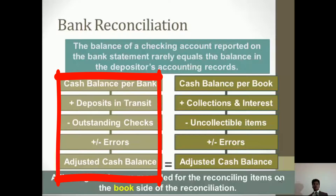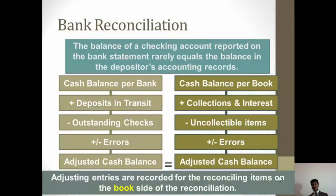Once we have done that, we come up with an adjusted cash balance as per the bank. The cash balance per bank, plus deposits in transit, less outstanding checks, and adjusted for errors, gives us the adjusted cash balance per bank.